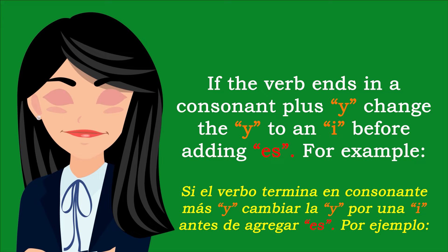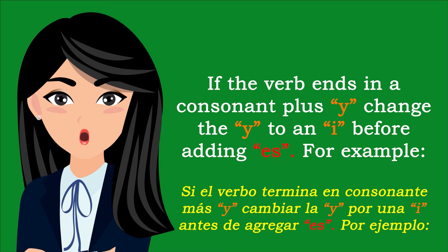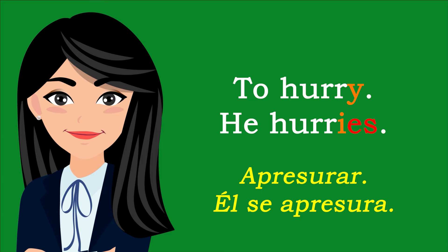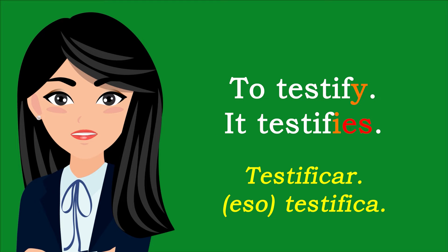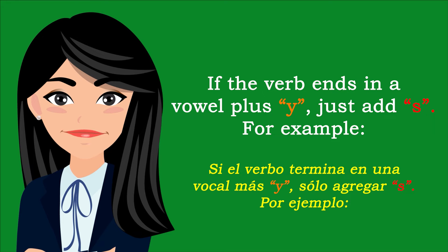If the verb ends in a consonant plus Y, change the Y to an I before adding ES. For example: To hurry — He hurries. To clarify — She clarifies. To testify — It testifies.